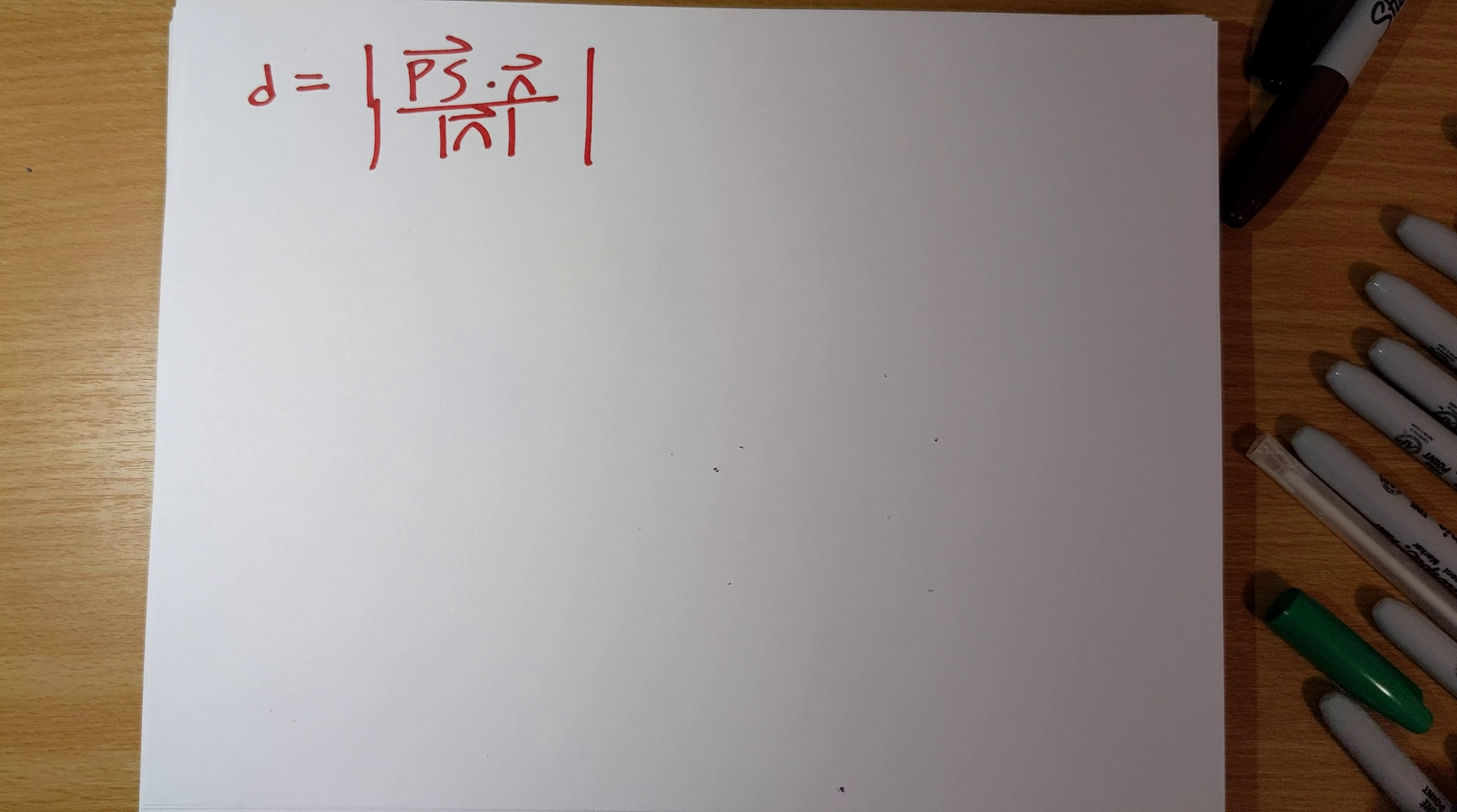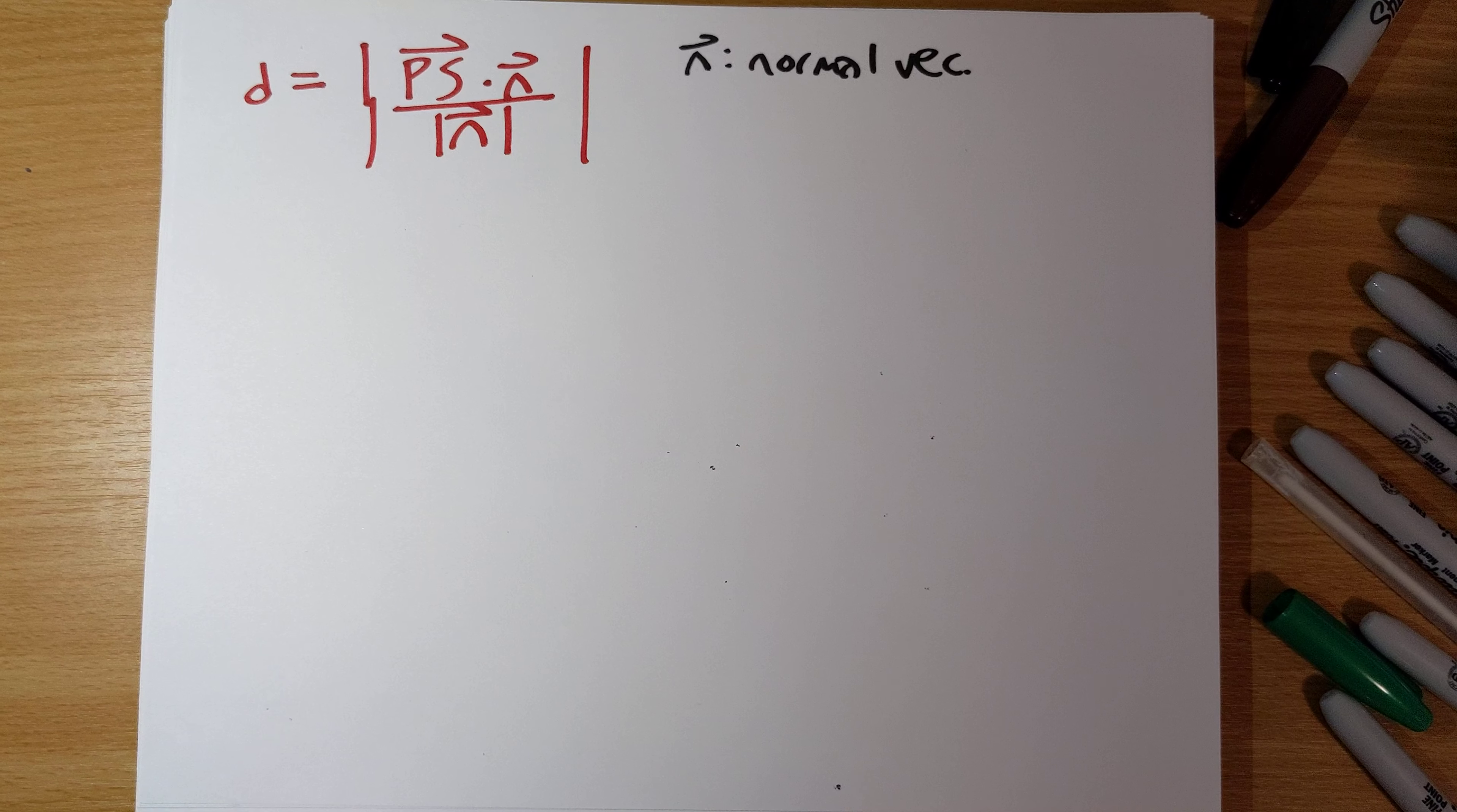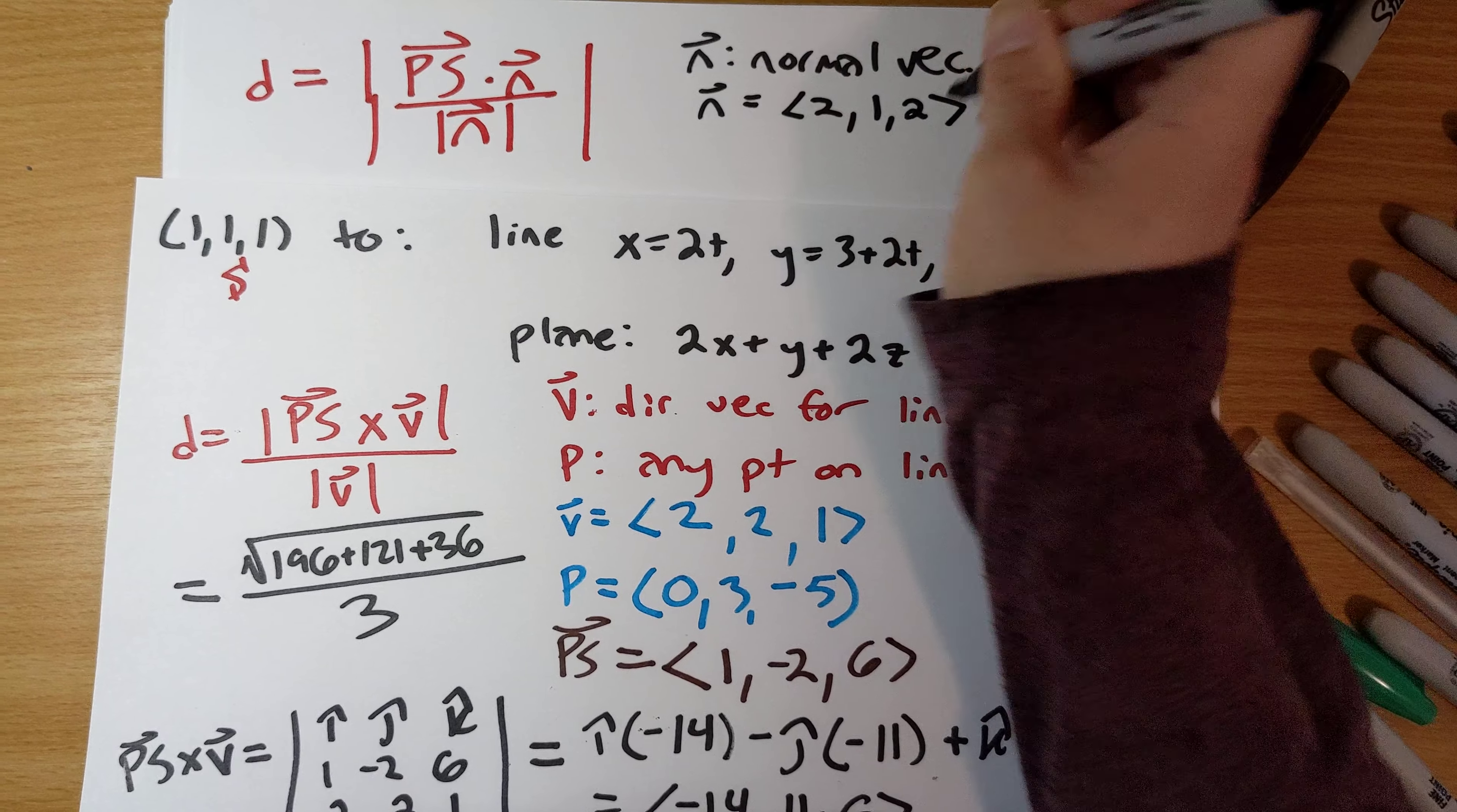So, in this case, n is a normal vector to our plane. And we find a normal vector just by reading off the coefficients here of x, y, and z. 2, 1, and 2.